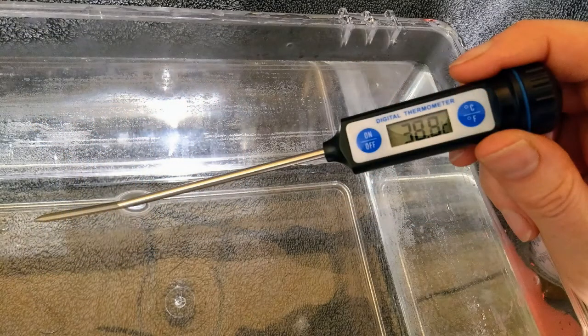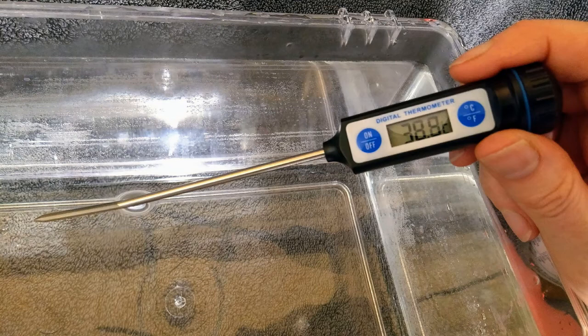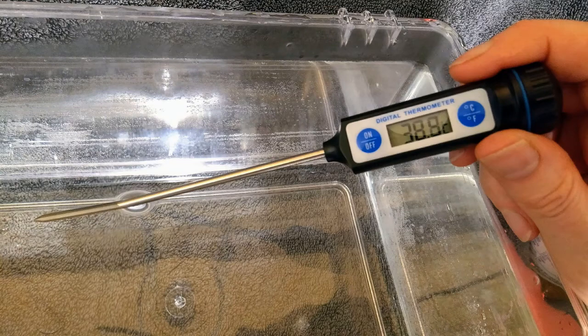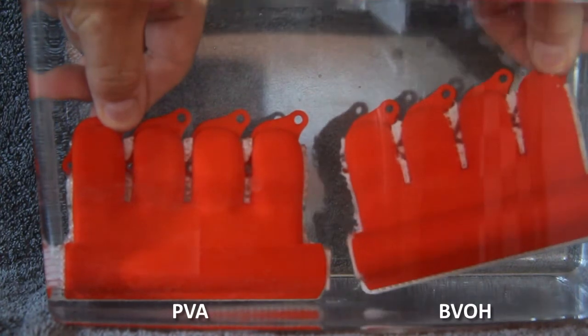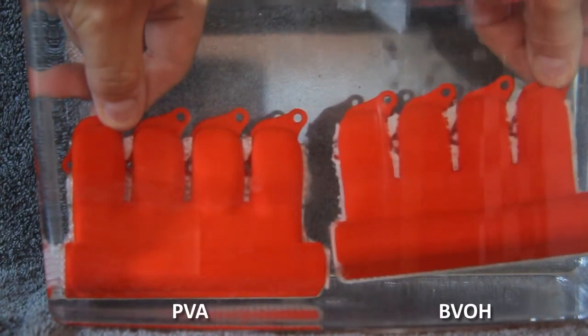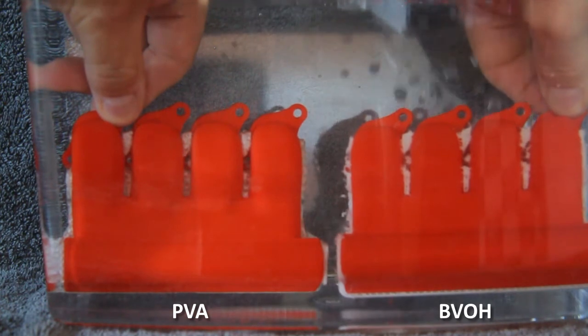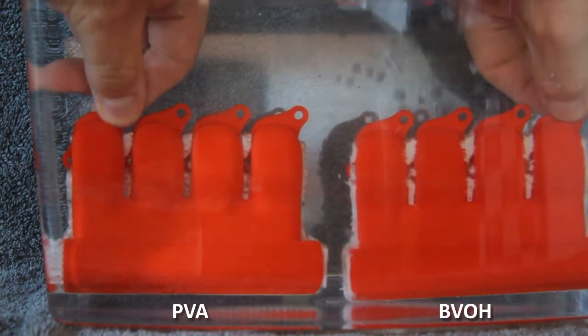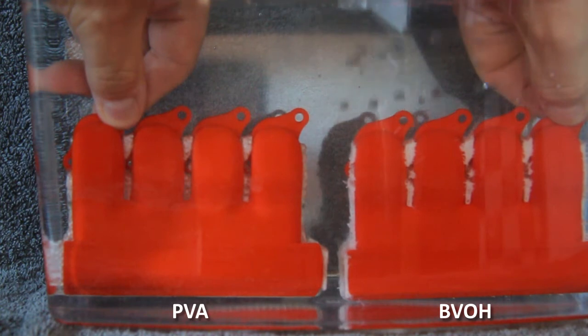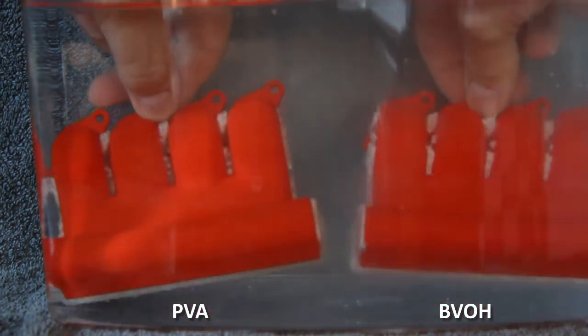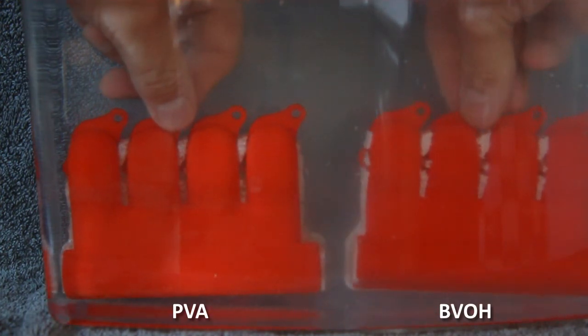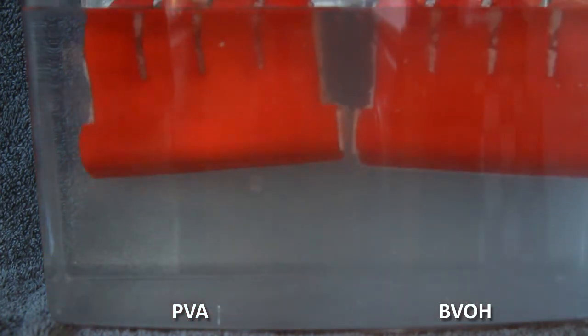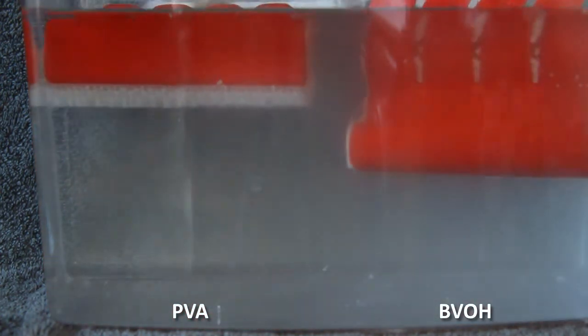So let's compare how they perform at the dissolve stage. This is a tank of warm water that I prepared at around about 38 degrees centigrade. And this was prepared ready to immerse both the PVA and the BVOH prints side by side. So we've got the BVOH on the right, the PVA on the left. The air bubbles escaping from the BVOH print are coming from the internal cavity of the 3D print. But after only a matter of seconds, this is after around about a minute, you can already see that there's a large amount of the BVOH material again dissolving into the water and the water started to take on a cloudy appearance.